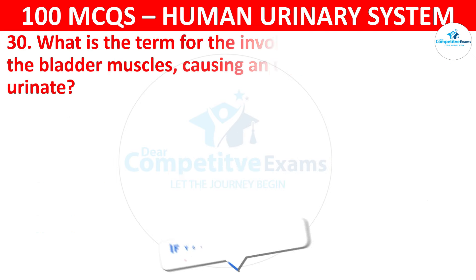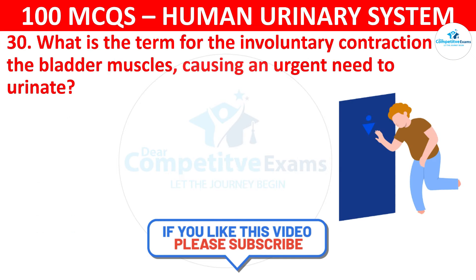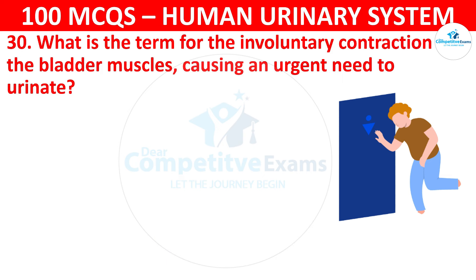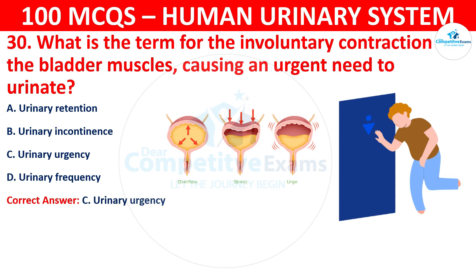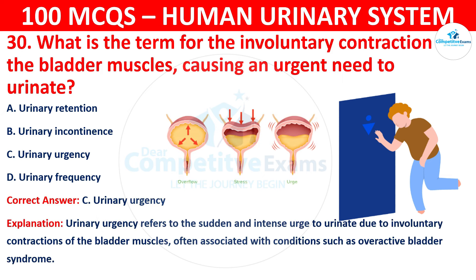Question 30: What is the term for the involuntary contraction of the bladder muscles causing an urgent need to urinate? The options are: urinary retention, urinary incontinence, urinary urgency, or urinary frequency. The correct answer is C, that is urinary urgency. Urinary urgency refers to the sudden and intense urge to urinate due to involuntary contraction of the bladder muscles, often associated with conditions such as overactive bladder syndrome.